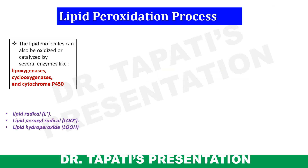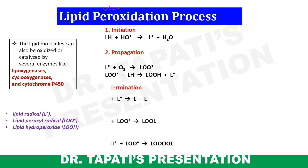Mainly three steps are involved in the lipid peroxidation process: initiation, propagation, and termination. The initiation step involves production of a lipid radical when a reactive oxygen species like the hydroxyl radical combines with a hydrogen atom of a lipid, producing a lipid radical along with water.